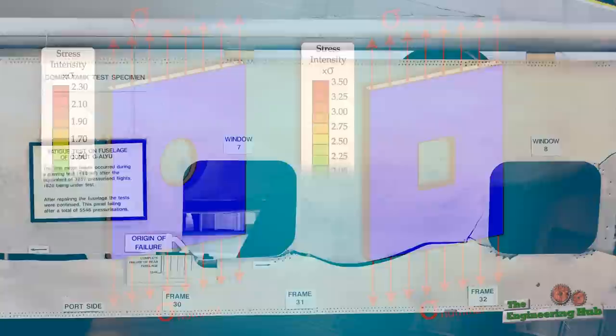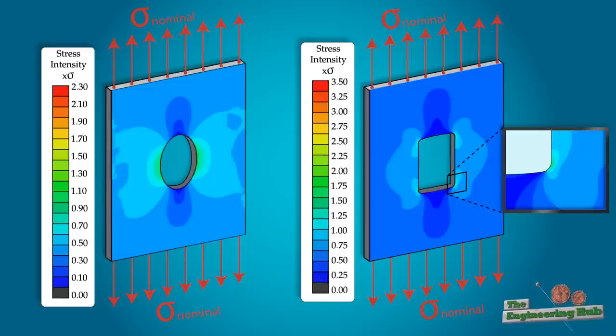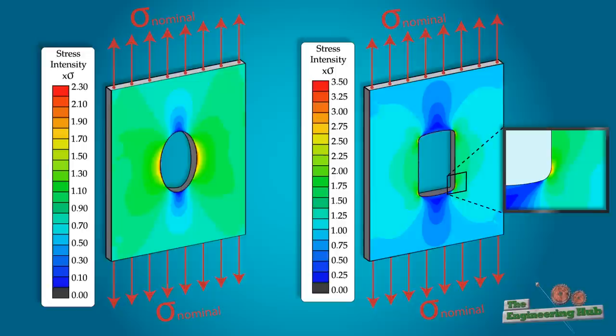The problem with openings is that they cause stress concentrations around them. For an elliptical opening, the stress concentration around the opening is about two times higher than the nominal stress. A rectangular opening with minor fillets on the corners experiences a stress concentration factor of more than three. These high-stress zones accelerate the crack growth and reduce the life of the plane.